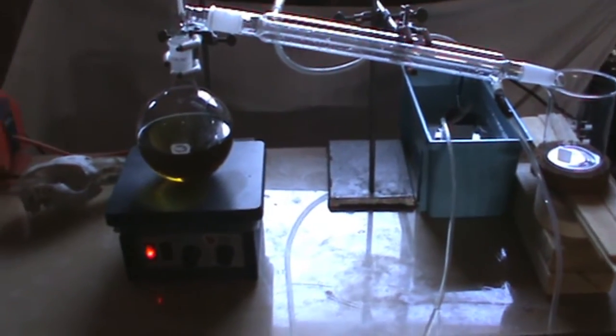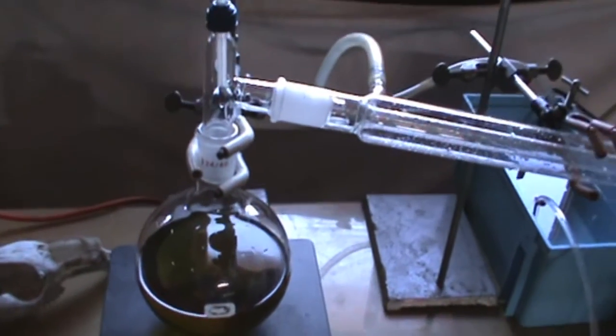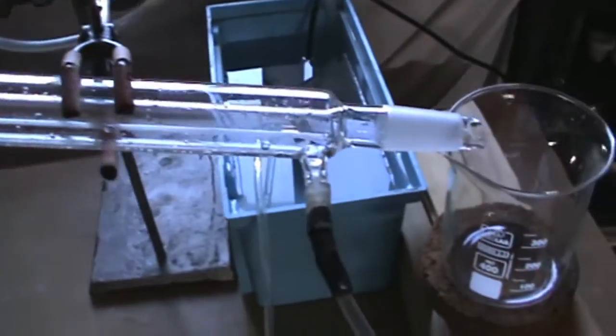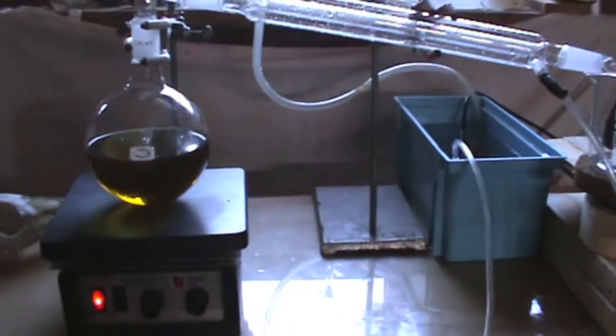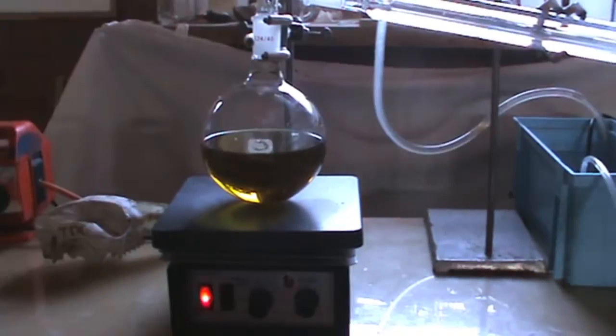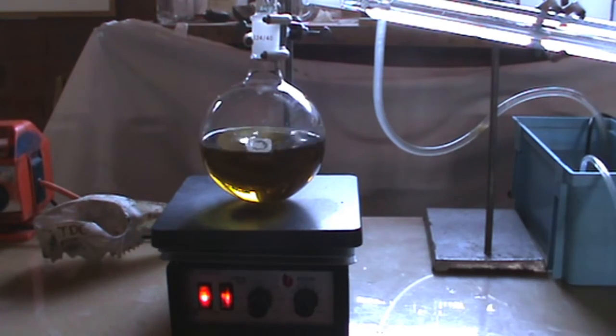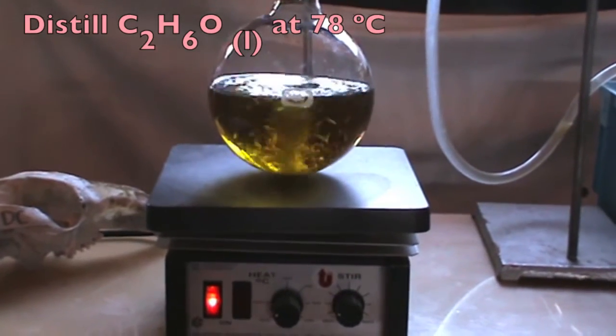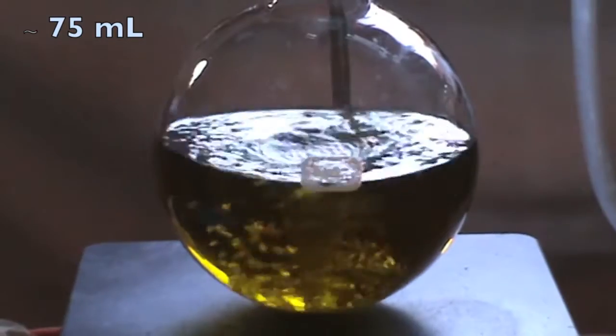After that, set up for simple distillation. Again, be sure to add in a magnetic stir bar. Turn the heating and stirring on. After that, distill off the ethanol at 78 degrees Celsius until the total remaining volume is about 75 ml.